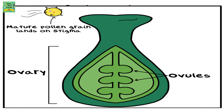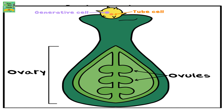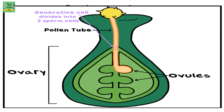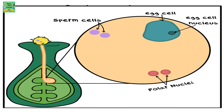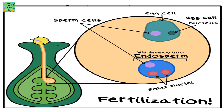This is a simple diagram of the pistil. The top part is called the stigma — that's where the mature pollen grains land. The bottommost part is called the ovary, and inside the ovary are present ovules.